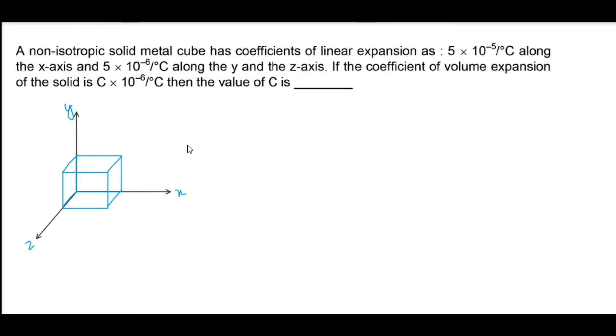A non-isotropic solid metal cube has coefficients of linear expansion as 5 into 10 raise to minus 5 per degree celsius along x-axis. So alpha x is 5 into 10 raise to minus 5 per degree celsius.